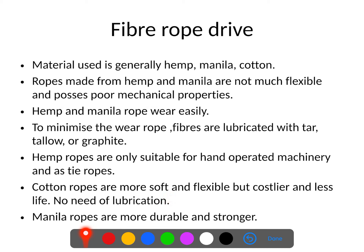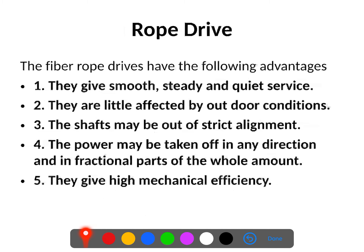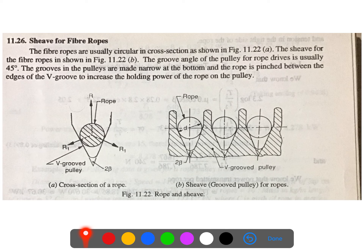Manila ropes are more durable and stronger compared to the other two types. Rope drives offer the following advantages: they give smooth, steady, and quiet service; they are little affected by outdoor conditions; the shafts need not be in strict alignment; power may be taken off in any direction, meaning bidirectional power transmission is possible; and they give high mechanical efficiency. The pulleys used for fiber rope drives are grooved pulleys.